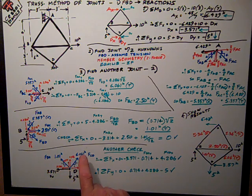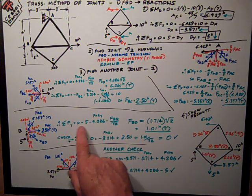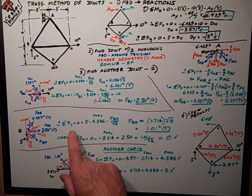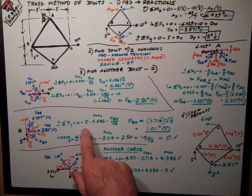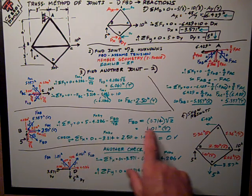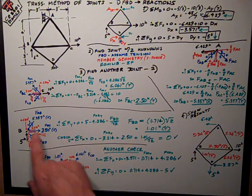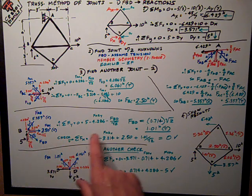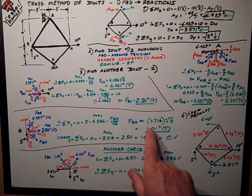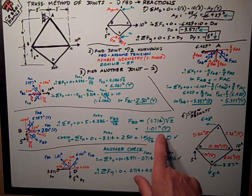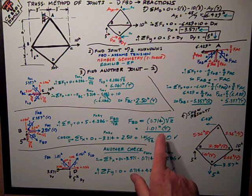And I can then solve for sum of forces in the y. I can solve for this two ways, sum of forces in the y, and figure it this way. The 5 up applied and the negative 4.286 from the y component of FAB. It works out to be 1.01 kips tension, positive, so it's tension.